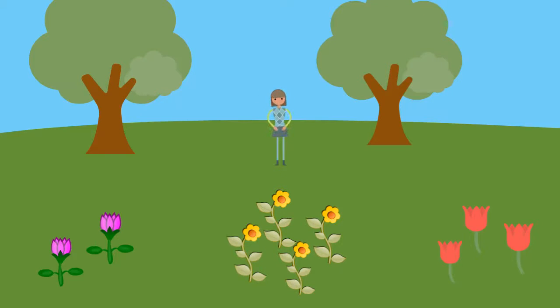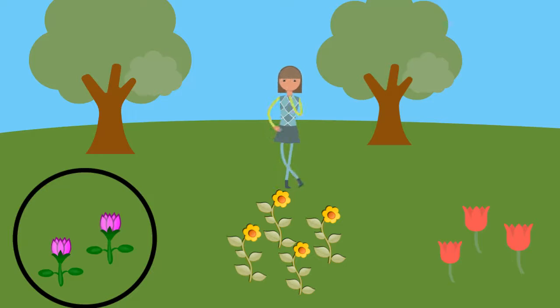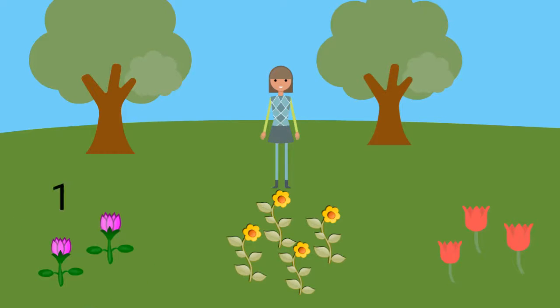We have three groups of flowers here. Red, yellow, and purple. Let's count the flowers in each group. Count the purple flowers with me. Ready? 1, 2. Great job!